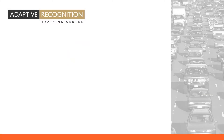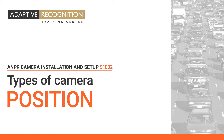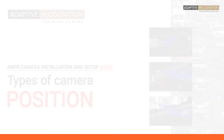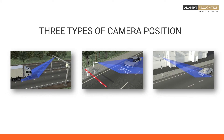Welcome to Adaptive Recognition How-To Video Series. High ANPR accuracy strongly depends on the ANPR camera position. Please note that in this video we mention values which are only recommendations to obtain maximum performance and not strict limitations. In this video we will show you the three types of camera positions: overhead, lateral, and transversal.